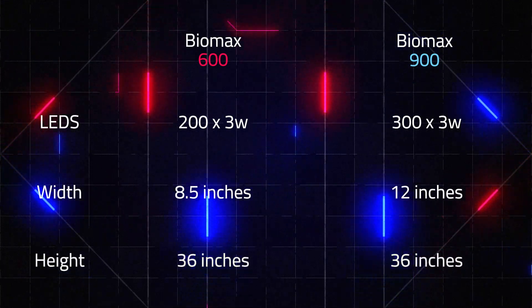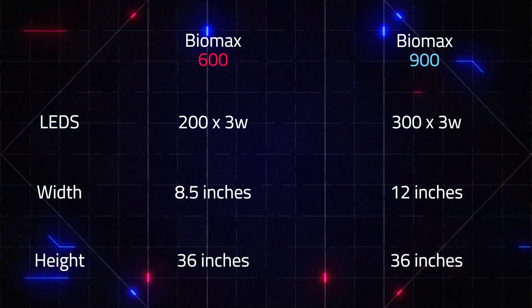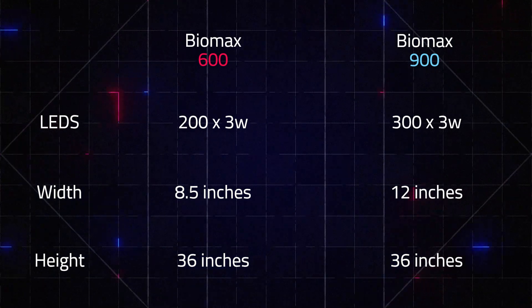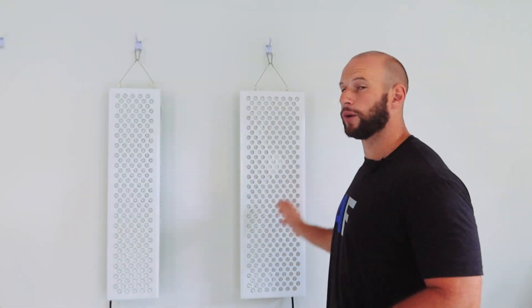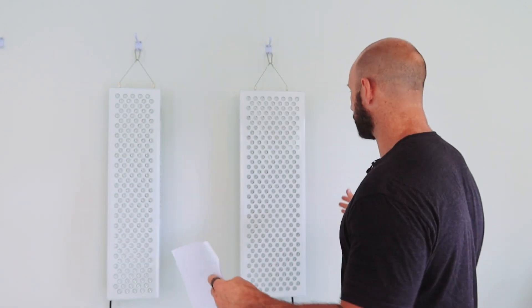The size is the first noticeable difference. The 900 here with 300 LEDs is 12 inches across. The 600 over here with 200 LEDs is 8.5 inches across. They're both the same height, 3 feet or 36 inches. There's just the width across. This does make the 900, at least in my opinion, the better panel if you're only using one panel and you want to get as much body coverage as possible. That extra width is going to help, especially if you're quite a big guy and you want full shoulder-to-shoulder or full back coverage.